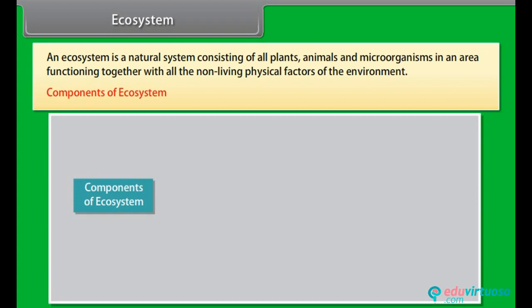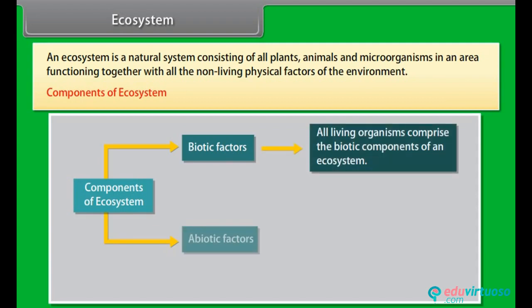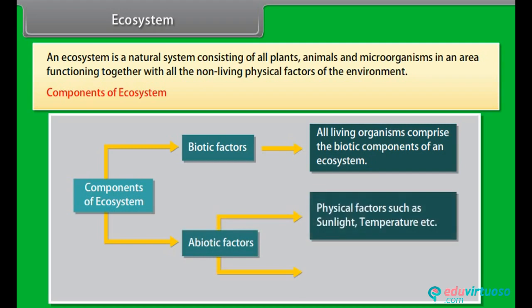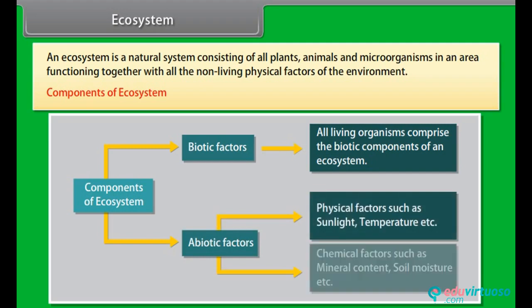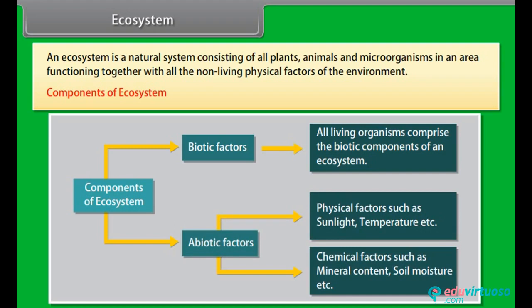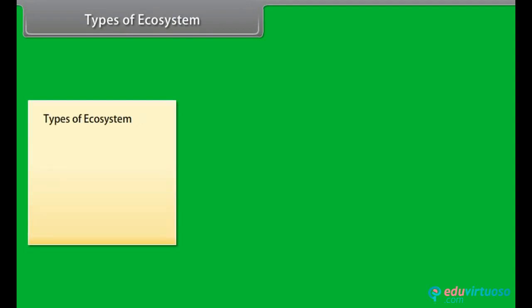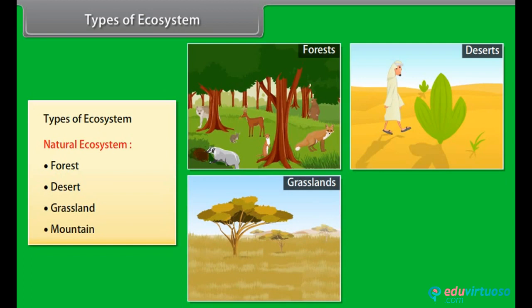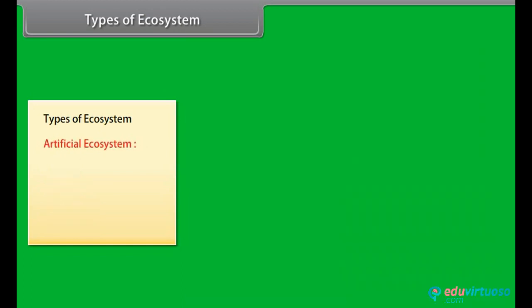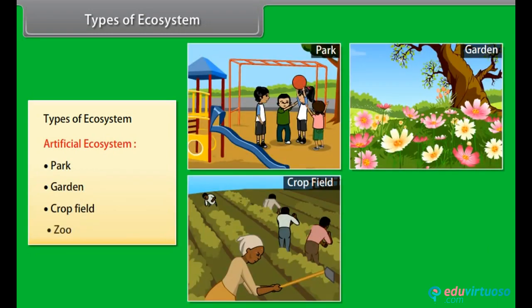An ecosystem comprises two components. One, biotic factors including all living organisms. Two, abiotic factors that include physical factors such as sunlight and temperature, and chemical factors such as mineral content and soil moisture. There are two types of ecosystems: natural ecosystems, which include forests, deserts, grasslands, and mountains; and artificial ecosystems, which include parks, gardens, crop fields, and zoos.